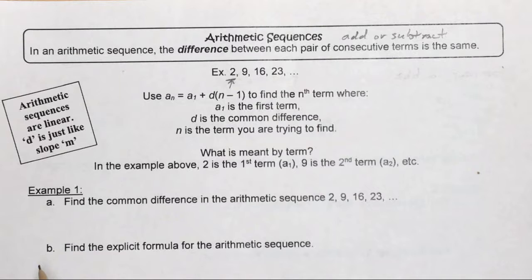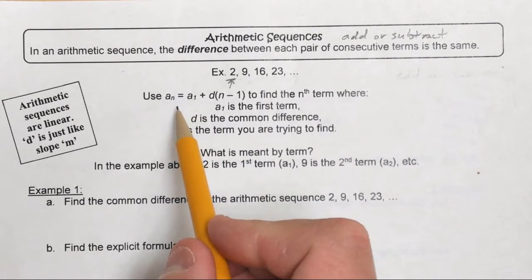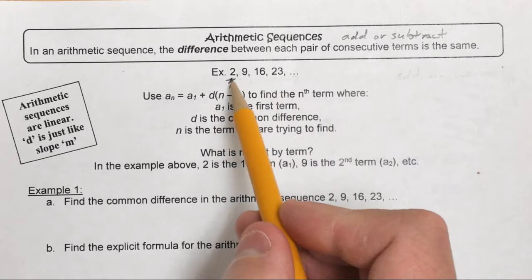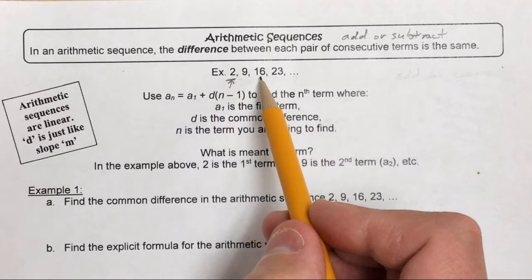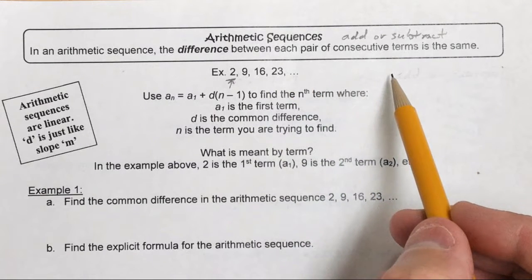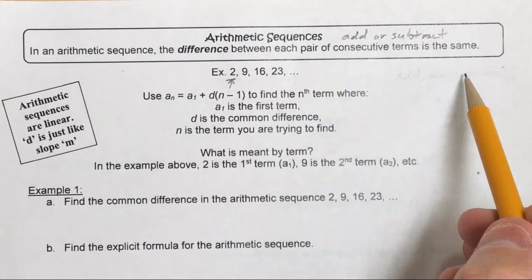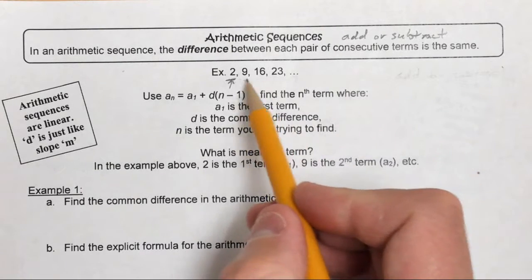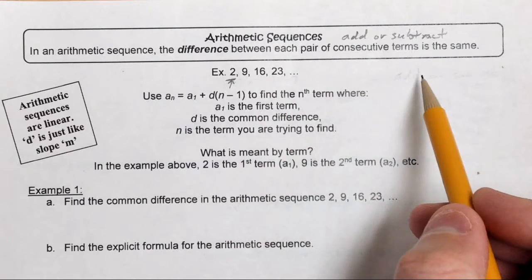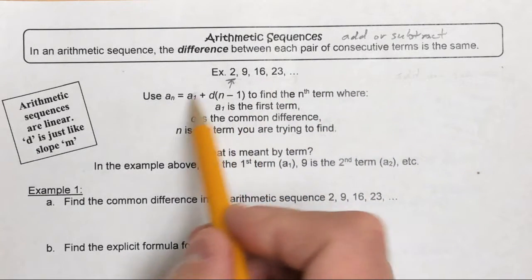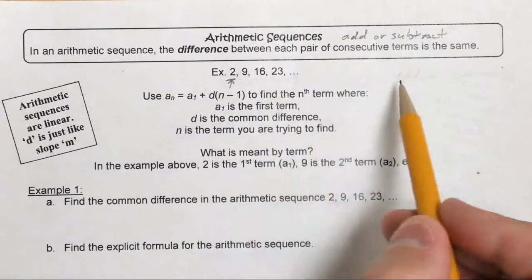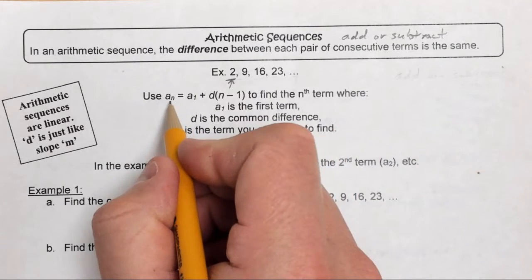There's an equation you can use in arithmetic sequences to find the nth term. For example, we have the first term, second term, this 16 is the third term, this is the fourth term. What if we wanted to find the 50th, the 65th, or the 100th term? It would take a while to keep adding, and you can make an error. But there's an equation you can use to find any term down the line.